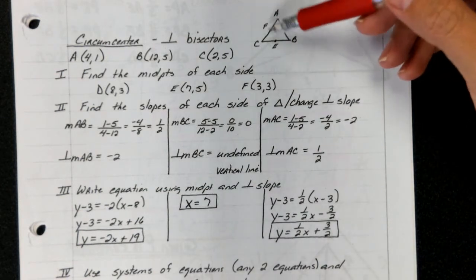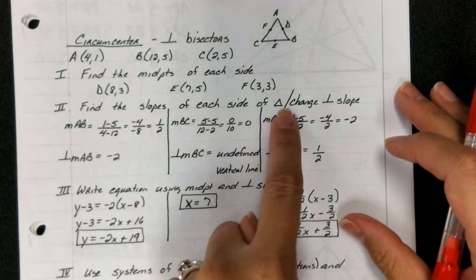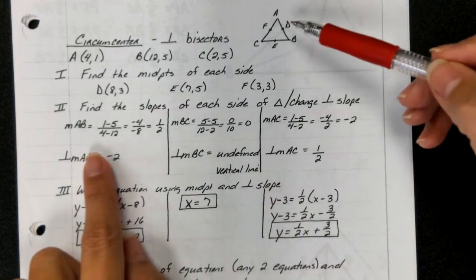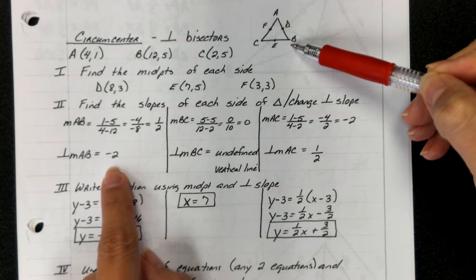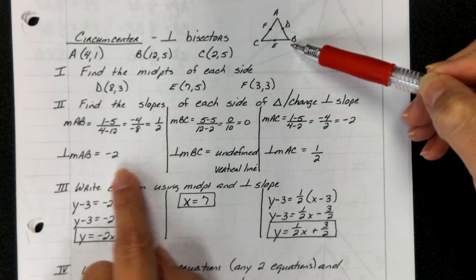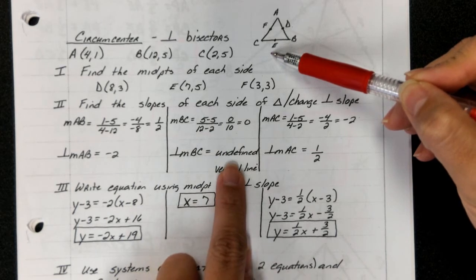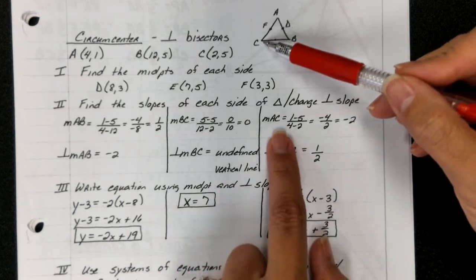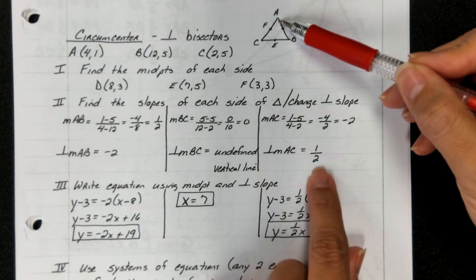Then we're going to find the slope of each side and change it to a perpendicular slope. So the slope of AB was 1/2, which makes this perpendicular slope negative 2. Slope of BC was 0, which makes his perpendicular slope undefined. We know that means a vertical line. Then the slope of AC is negative 2, meaning his perpendicular slope will be 1/2.